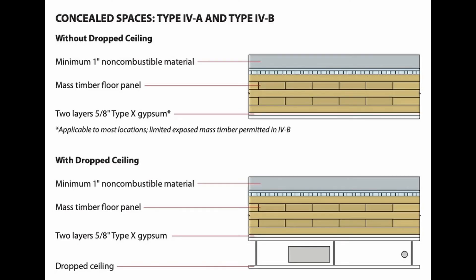For Type 4A and 4B, the requirements are the same as each other and very similar to 4C, except that rather than 40 minutes of fire protection, you must provide 80 minutes. This means two layers of 5/8" Type X gypsum wallboard applied directly to the mass timber surfaces, with the drop ceiling or raised access floor above or below acting as the concealed space boundary.